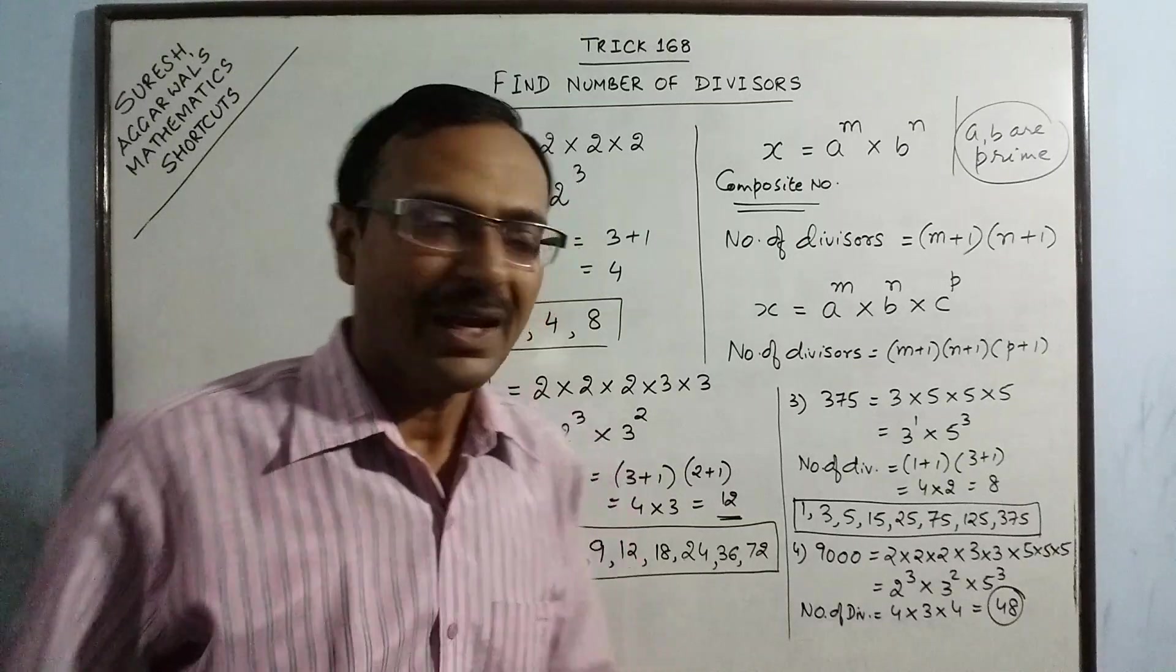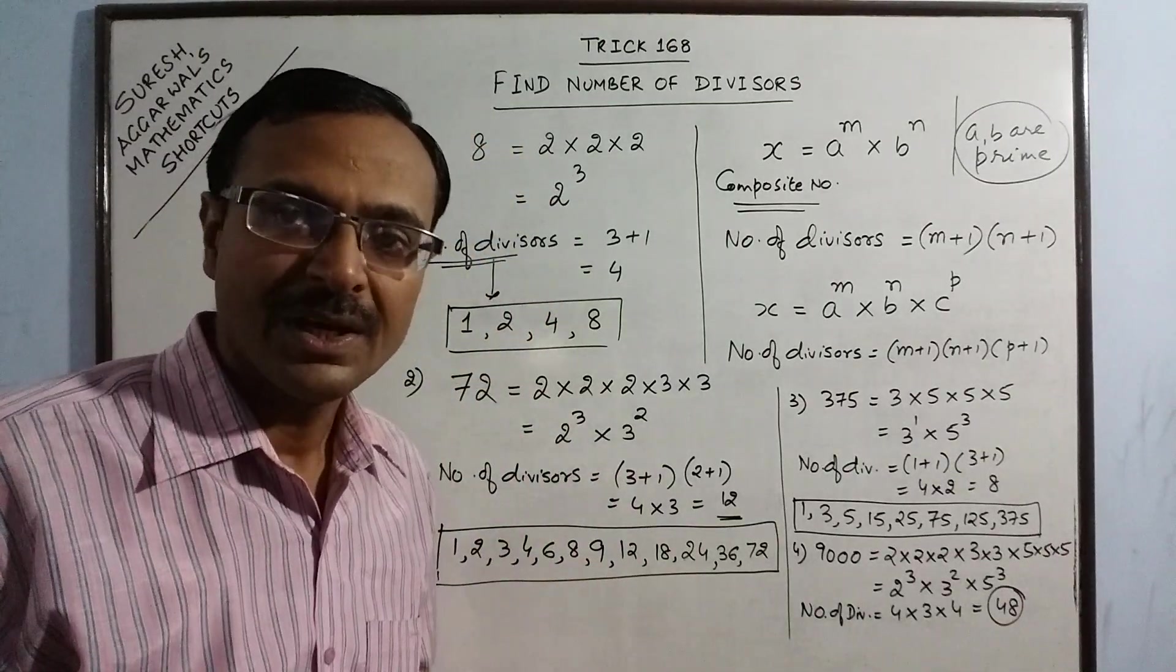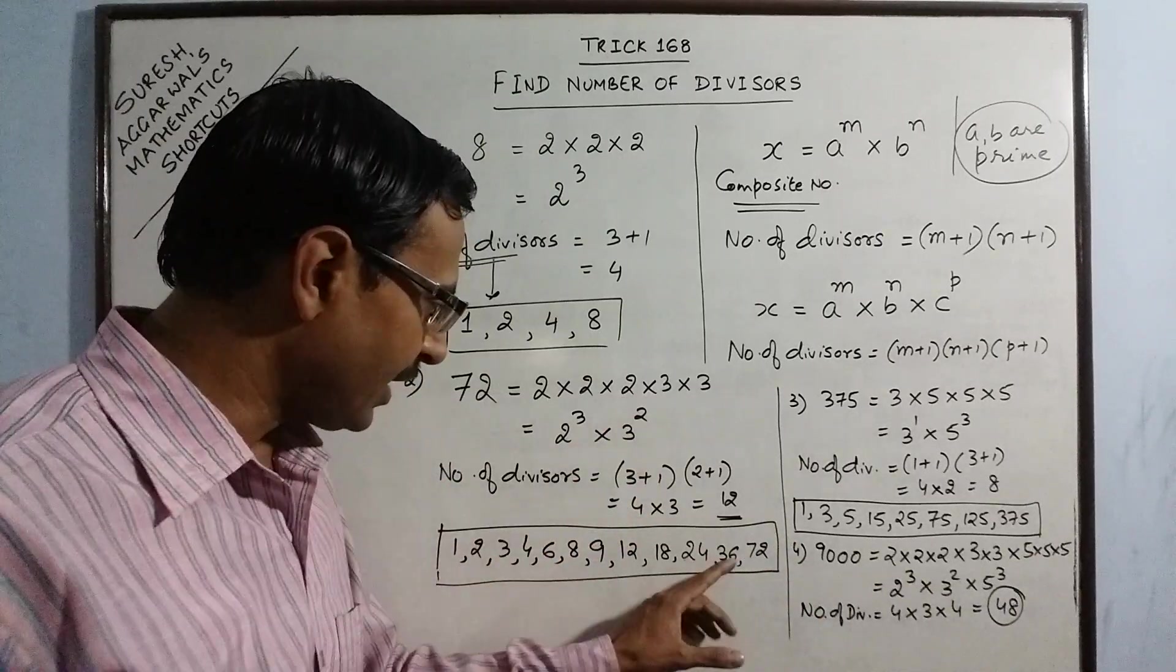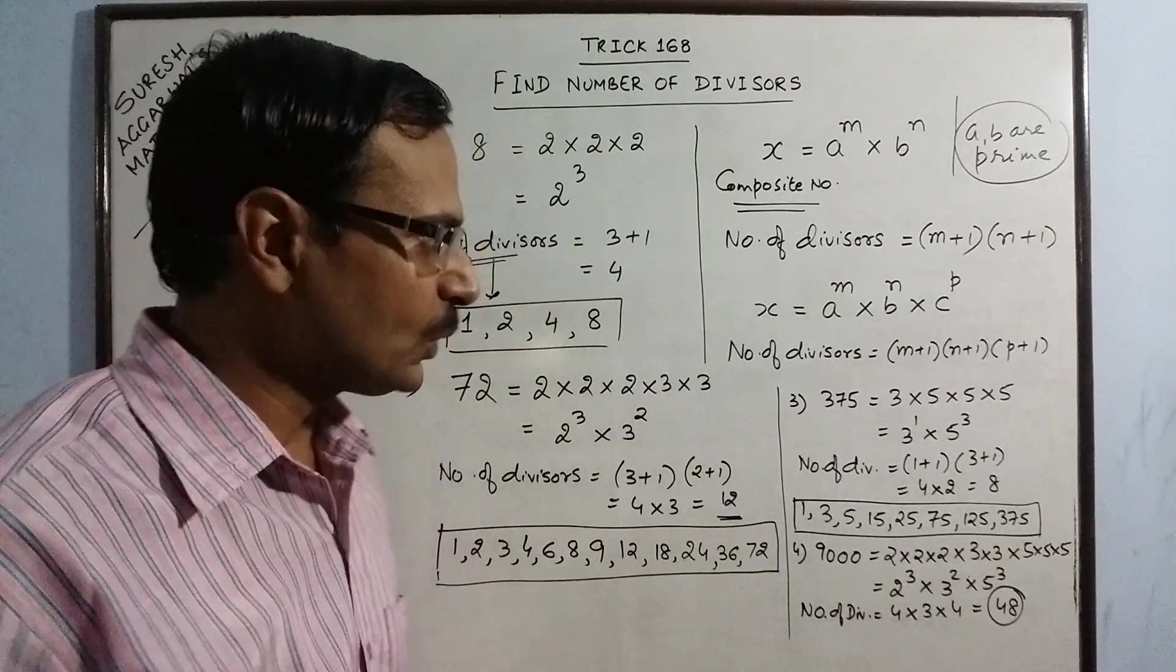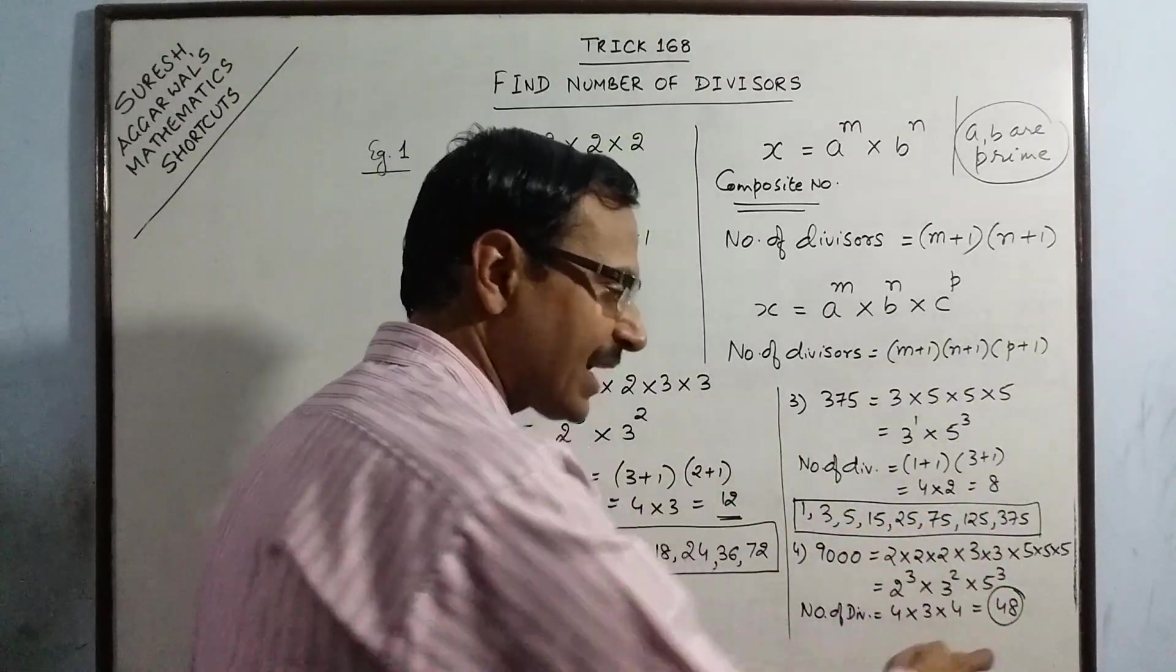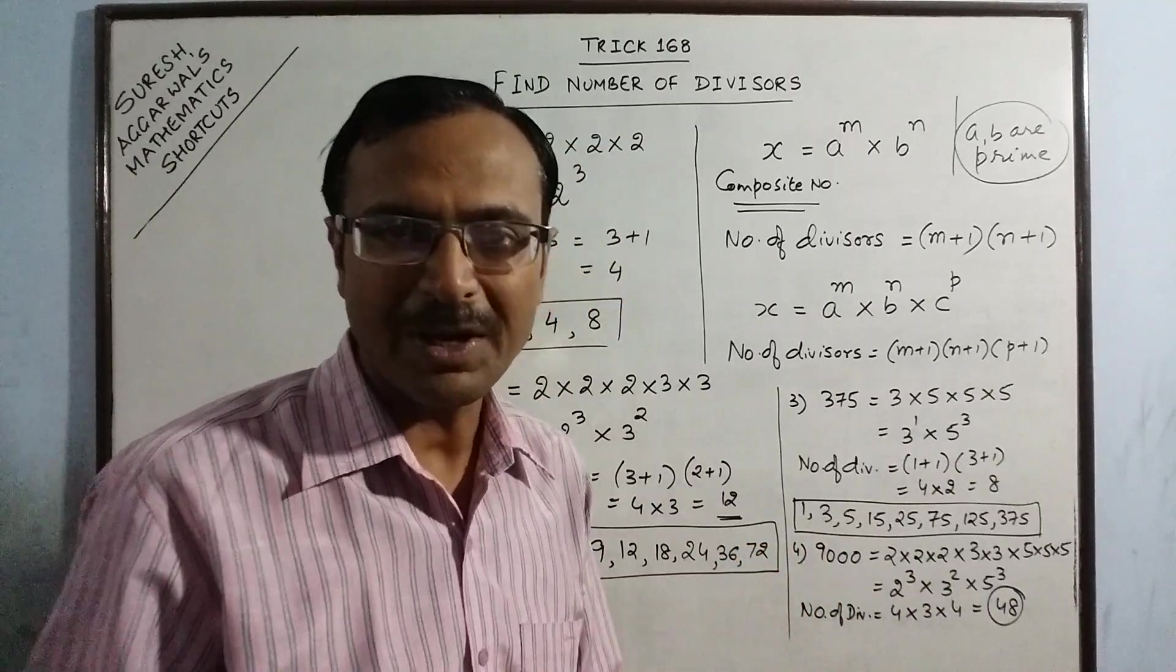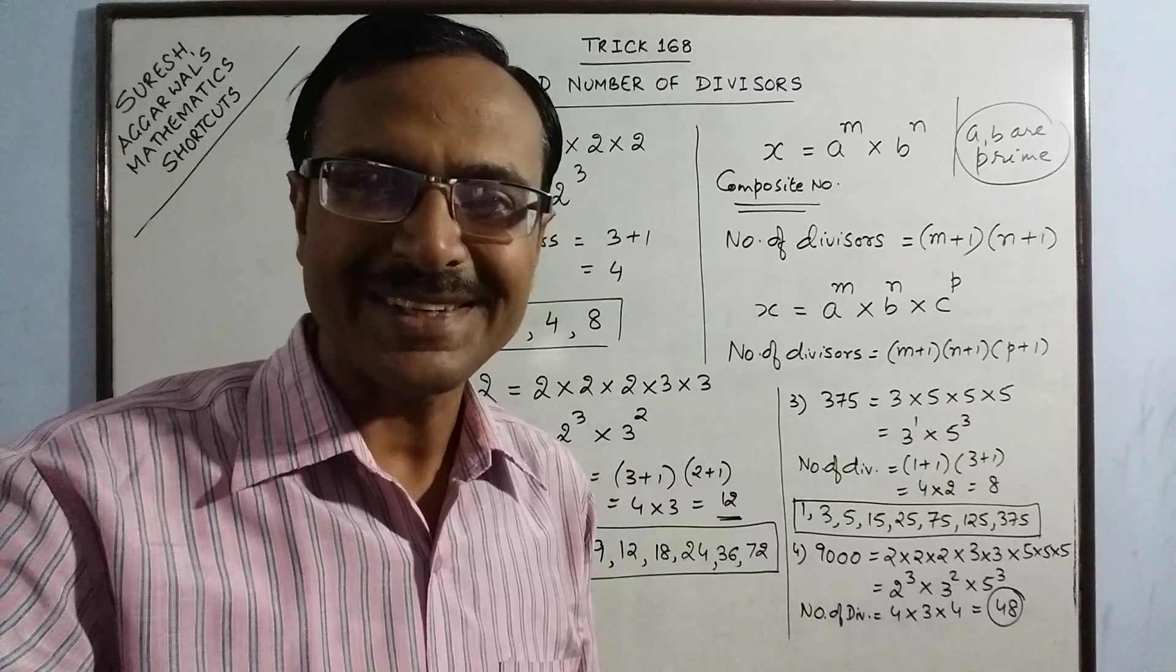So an important shortcut for competitive exams and students can, at junior level, can verify how many divisors they have written and whether they have missed out any divisor or not. So through this method you can save a lot of time in examination without listing the number of divisors. You can find the exact number through which that particular number is divisible. So keep learning and keep loving mathematics. Share and subscribe the channel if you like it.